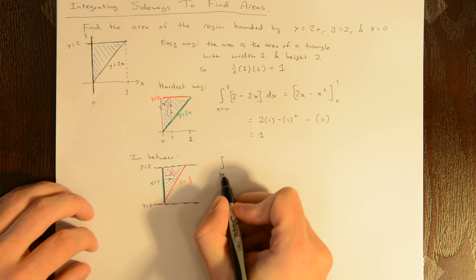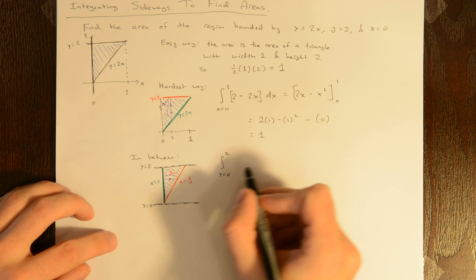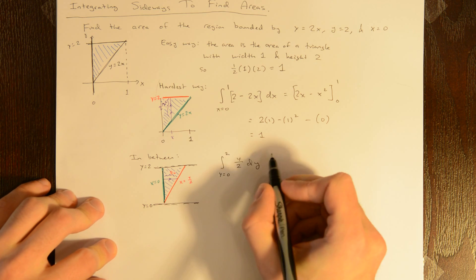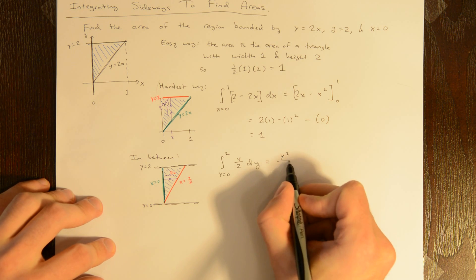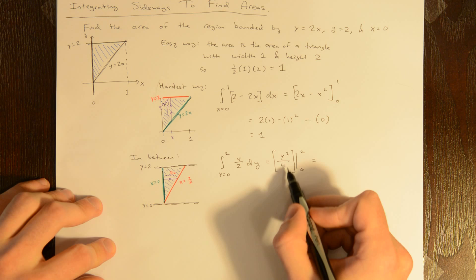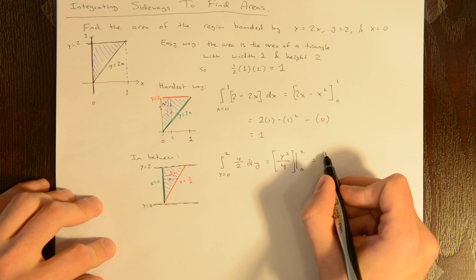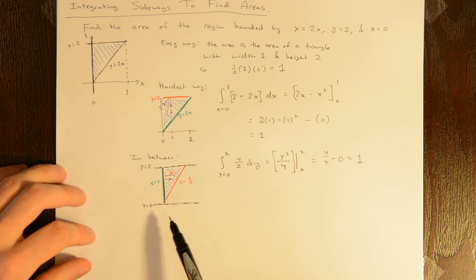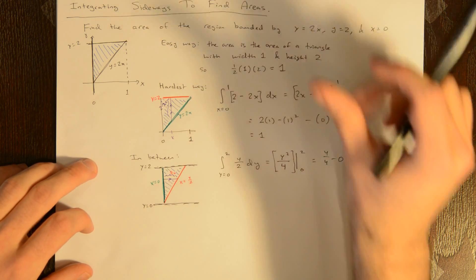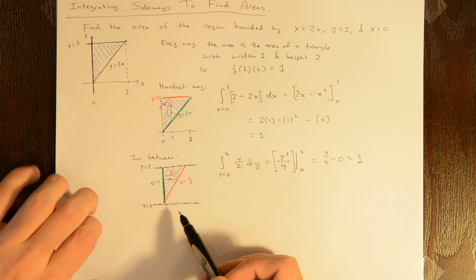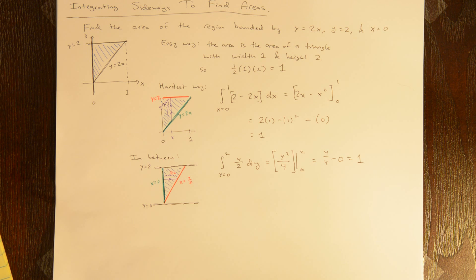So I integrate from y equals 0 to y equals 2 of (y over 2) dy. The antiderivative of y over 2 is y squared over 4, evaluated from 0 to 2. When y is 2, I get 4 over 4, which is 1, and when y is 0, I get 0. So this is 1. These are three different ways to find the same area: a geometric way, integrating with respect to x which is a bit more complicated, and integrating sideways with respect to y which is actually a bit easier since you don't have to subtract off the lower function. We'll do some more complicated examples as well.